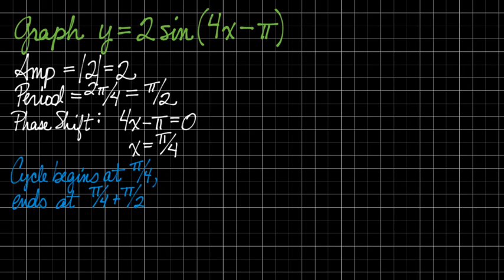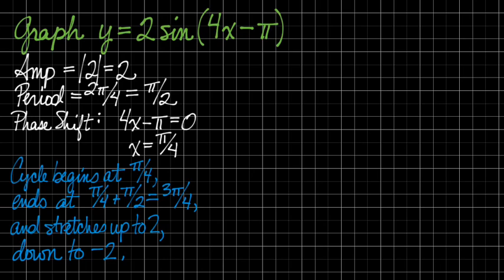And the cycle is going to end at phase shift plus period. And that's equal to 3 pi over 4. And I can tell there's no up or down shift. So this graph is going to stretch from a max of 2 down to a min of negative 2.